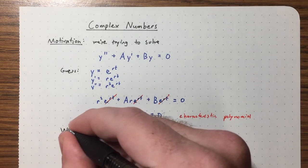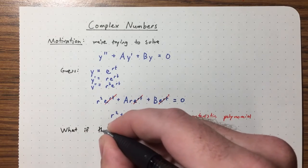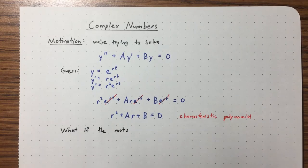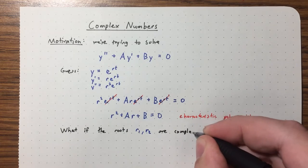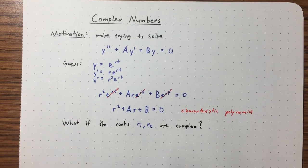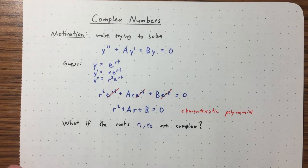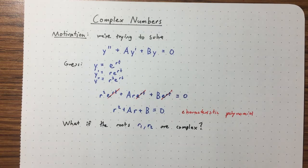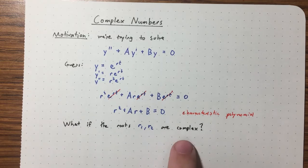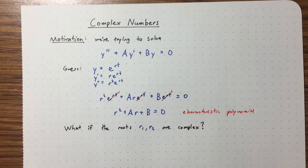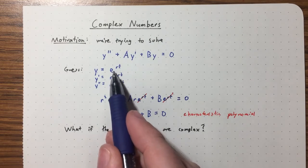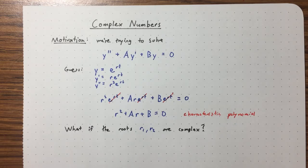But what if we don't have two real roots? What if the roots r₁ and r₂ are complex — non-real? We can still formally write e^(r₁t) and e^(r₂t), but we don't really know what to do with those solutions because they involve complex numbers in the exponent. So that's what we're going to talk about today.